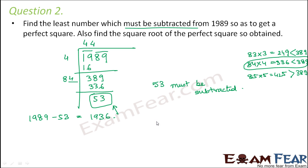What is that number which we get when we subtract 53? Let us see: 1989 minus 53 gives you 1936. Now let us find the square root of 1936. Obviously square root of 1936 would be 44 because we will follow the same procedure just that at the end we will get the remainder as 0.